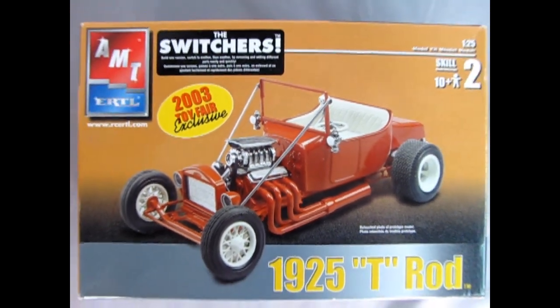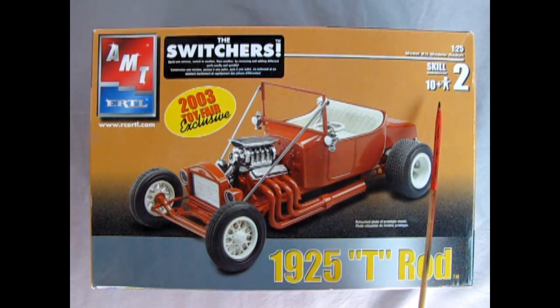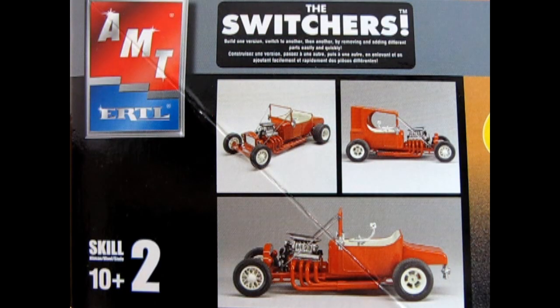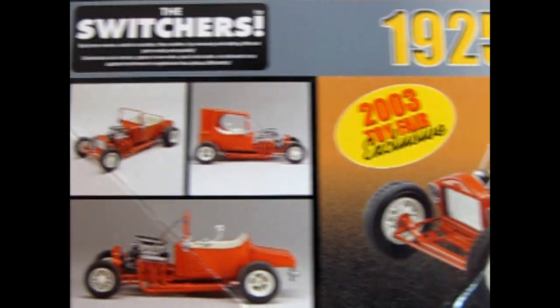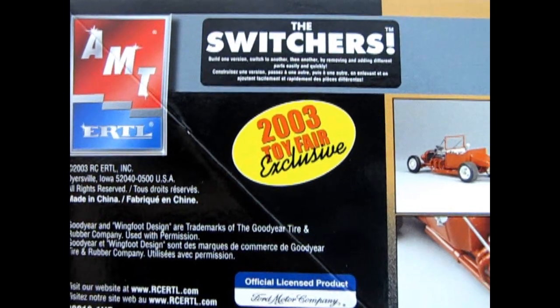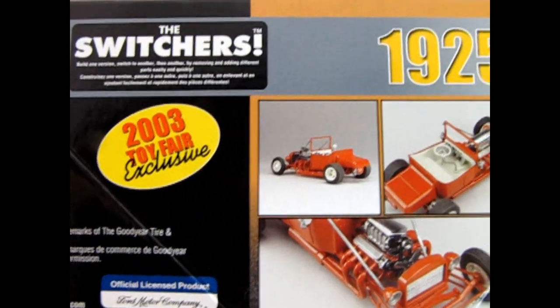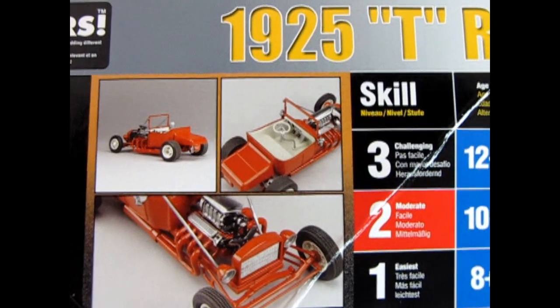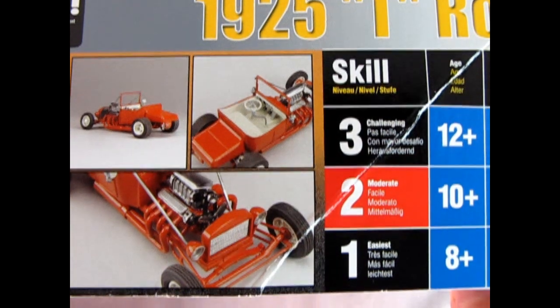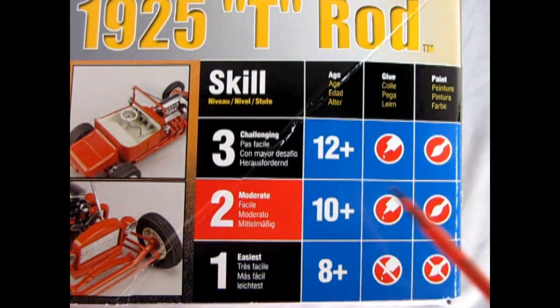Here we have a very special kit. This is the AMT Ertl's The Switchers 1925 T-Rod, a skill level 2 kit for ages 10 and up, molded in 1/25th scale. This is the 2003 Toy Fair Exclusive. On this side of the box, we get three wonderful photographs of the model showing different variations and options that come with this kit, including this really cool C-cab type of body style.